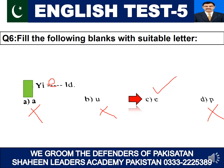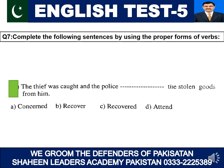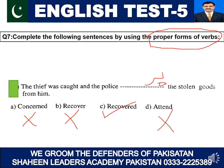In question number six: complete the following sentences by using the proper form of verb. The sentence is: 'The thief was caught and the police ___ the stolen goods from him.' 'The police concerned' — wrong. 'The police recover' (first form) — wrong. 'The police attend' — wrong. 'The police recovered' — the police recovered the goods. Notice that 'was caught' is passive voice, past tense; therefore inside the sentence you cannot use present tense. You must use 'recovered,' the second form of the verb.